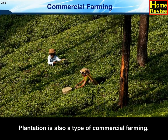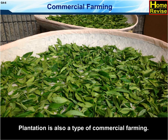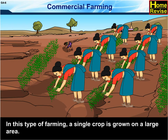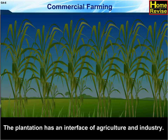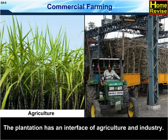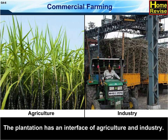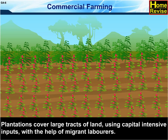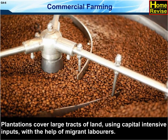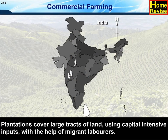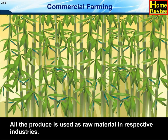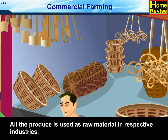Plantation is also a type of commercial farming. In this type of farming, a single crop is grown on a large area. The plantation has an interface of agriculture and industry. Plantations cover large tracts of land using capital intensive inputs with the help of migrant laborers. All the produce is used as raw material in respective industries.